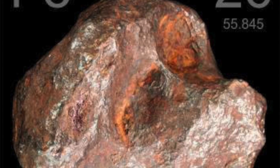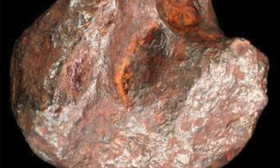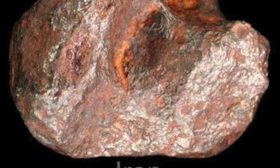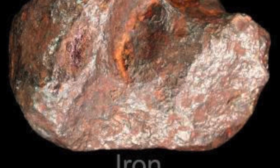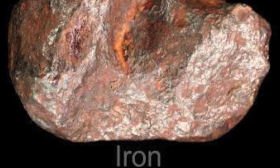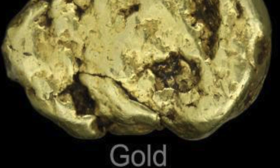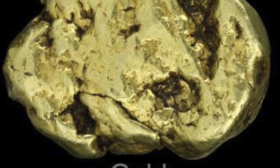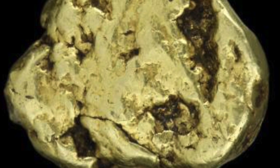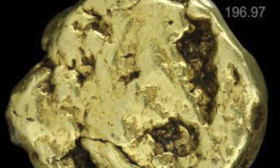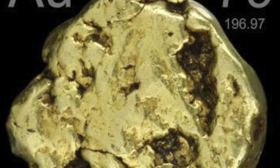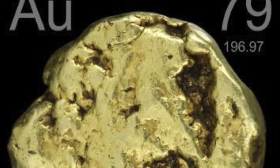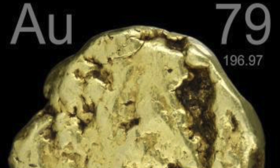The wide central block of the periodic table is called the transition metals. This block of elements is relatively stable, except for technetium, which is radioactive. Some of the elements in this block oxidize slowly, the most notable being iron. Some are known for their resistance to corrosion, for example, gold and platinum.